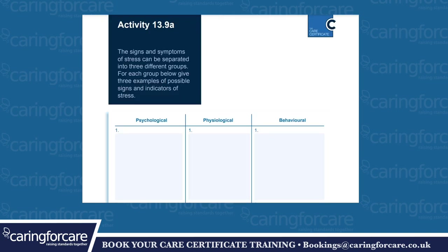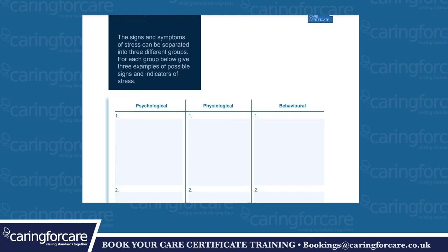Activity 13.9a: the signs and symptoms of stress can be separated into three different groups. For each group below, give three examples of possible signs and indicators of stress. The three groups are: psychological, physiological, behavioural.